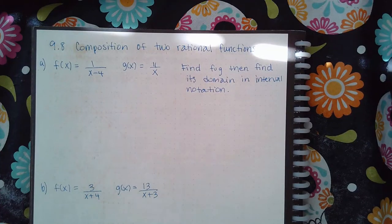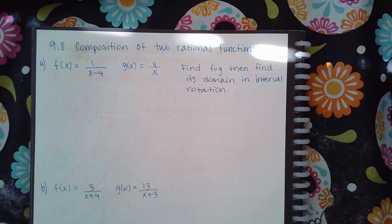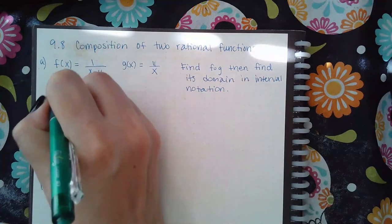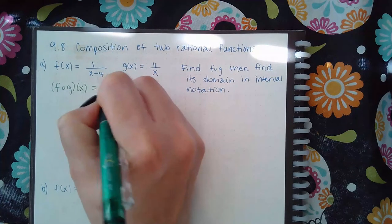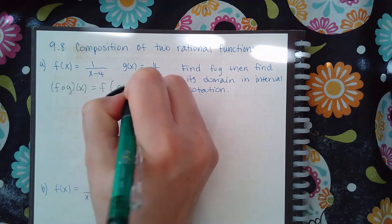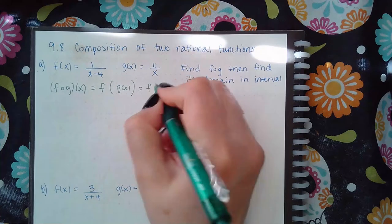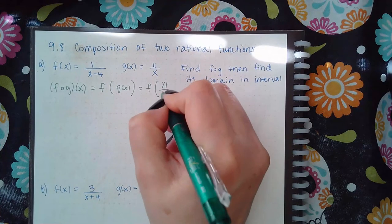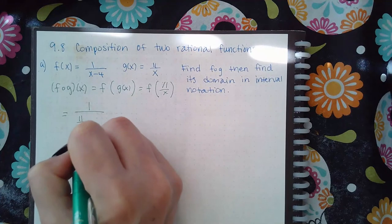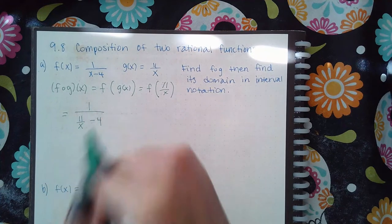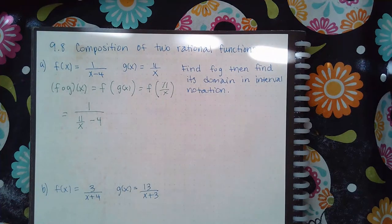Here we have 9.8, the composition of two rational functions. It wants f of g, so that's f of g of x, which means f of 11 over x, which means 1 over (11 over x) minus 4.